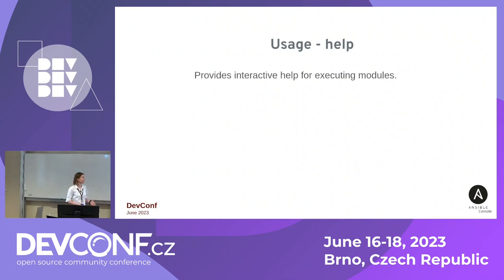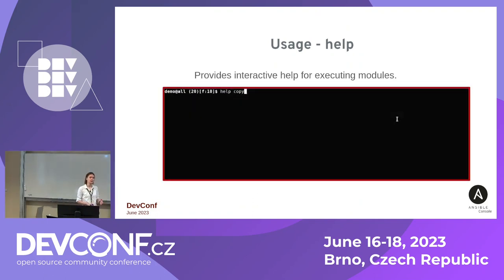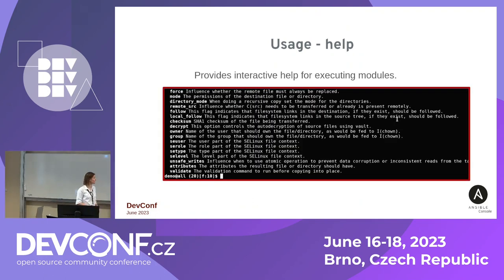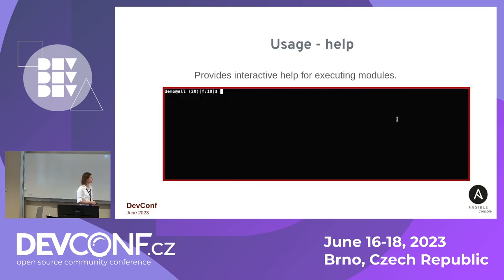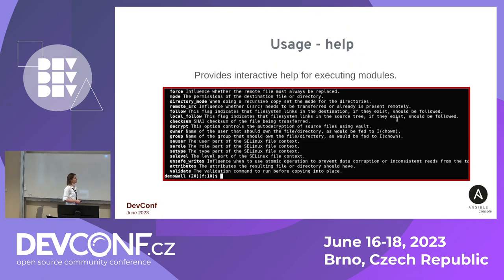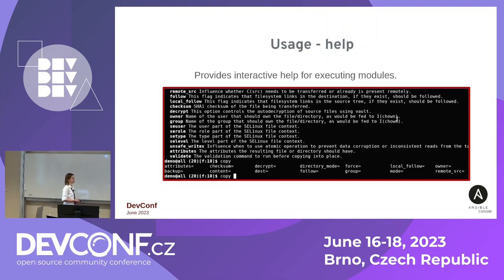Ansible console also provides interactive help, so you can check the syntax of each command, check the execution, and easily get help and autocomplete for every module. Here is the demo: for example, I want to get help on the copy command and display what it can do. I also want to show autocomplete, and here is how it works.